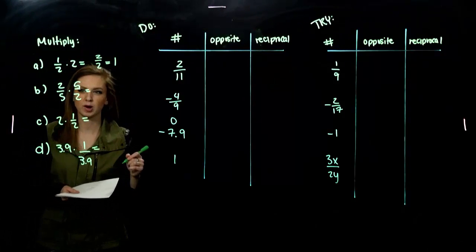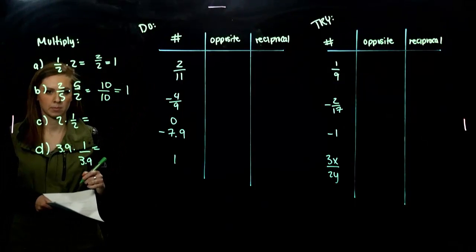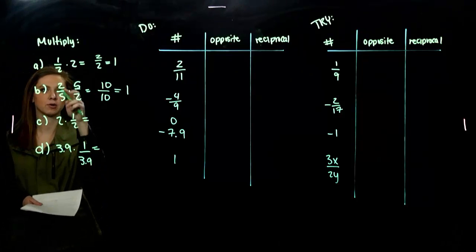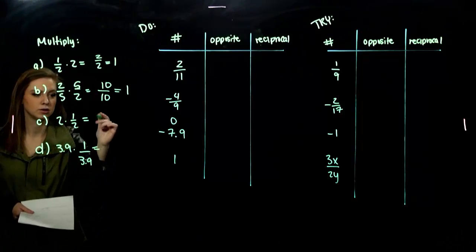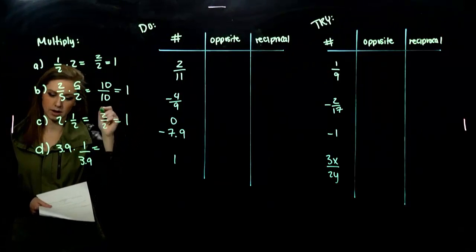What about for part B? Again, straight across the top, straight across the bottom. What results out? 1. If I switch the order around, it doesn't matter. We're going to get the same thing as part A. 2 over 2, which is 1. Same thing divided by the same thing.